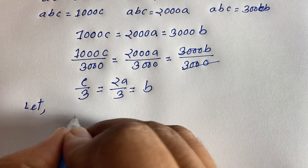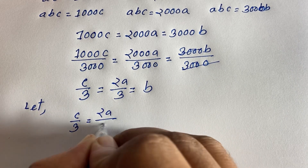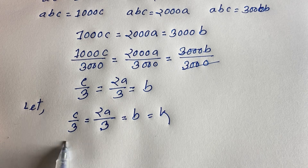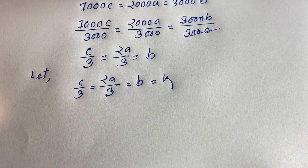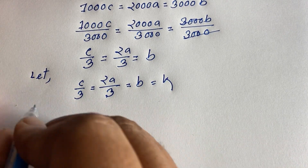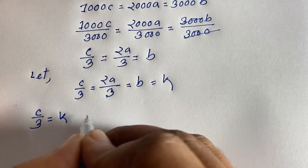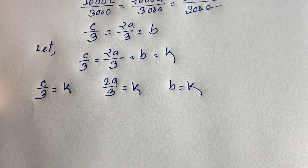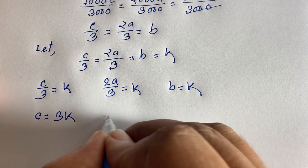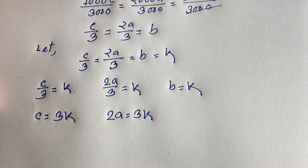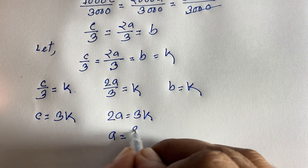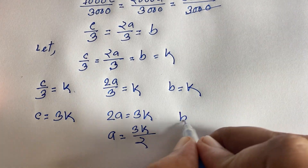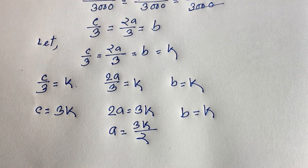Let c/3 = 2a/3 = v = k. So c/3 = k gives c = 3k. And 2a/3 = k gives 2a = 3k, so a = 3k/2. And v = k.